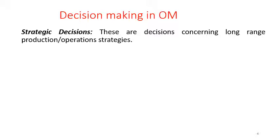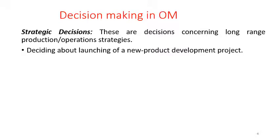Strategic decisions concerning long-range production operations are usually taken by the top level of management. Examples include deciding about launching a new product development project. In an educational institution, this could be the introduction of a new course, a new engineering stream, or revising the curriculum. Based on inputs from the entire organization, the final decision is taken by the top level — the principal or management.